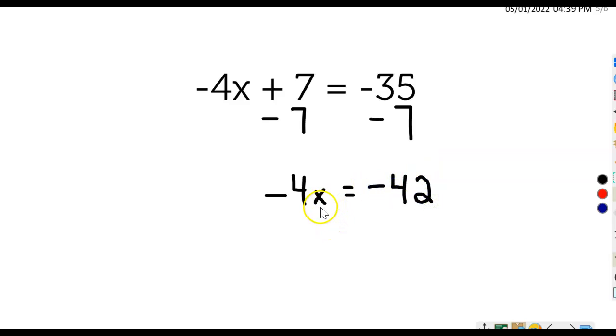Now it's time to isolate the variable. So we would undo multiplying by negative 4, and we divide by negative 4 here. So once again, we have two math problems. We have a left side math problem and a right side math problem. On the left side, the answer is x.